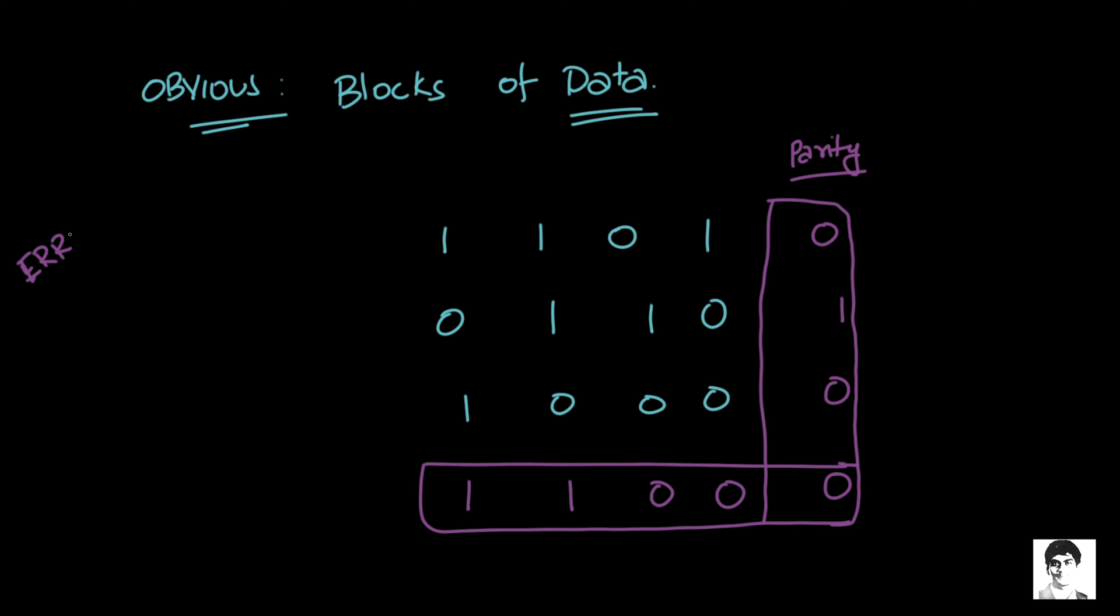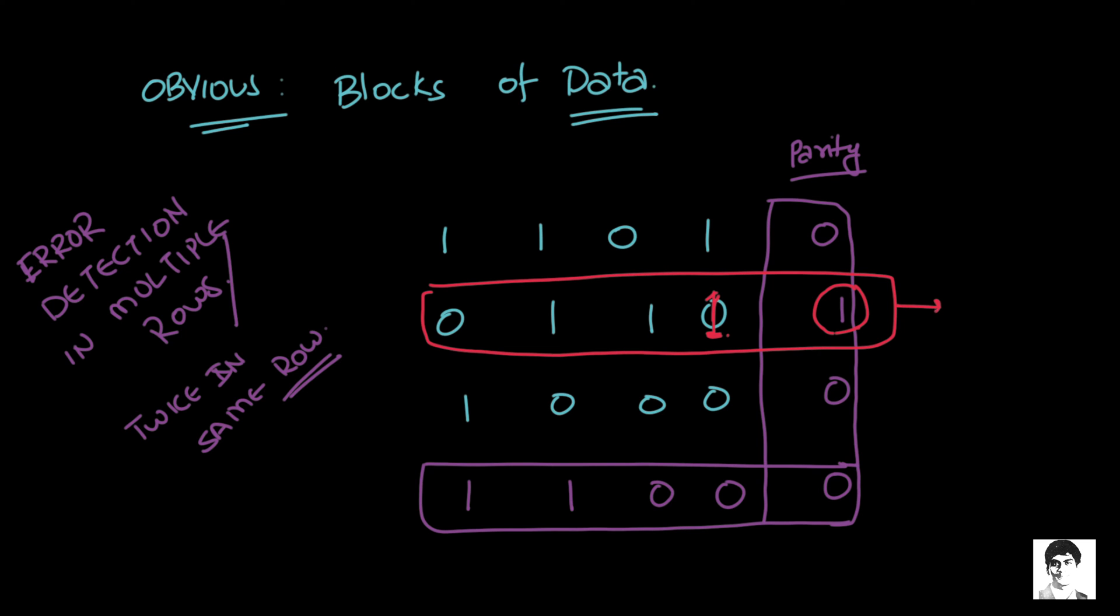So the use of a parity block over a singular parity bit is error detection in multiple rows or multiple columns, or if an error happens twice in a same row. For example, one of the zeros in row two came up as one, then in that specific row, the error would have been detected. But for example, if in the same row there was a different bit, say a one became a zero, in that case the column would detect the error. But in the row, that parity would not have detected the error because the number of ones would still remain odd.